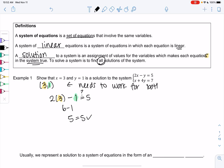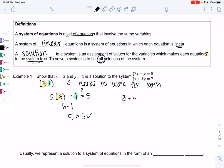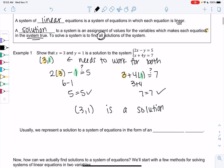But we need to check both equations. If it only works for 1, it's not a solution. It needs to work for both. So we'll check in the second equation. So x plus 4y becomes 3 plus 4 times 1, and then does it equal 7? So again, 3 is x, 1 is y. So we get 3 plus 4, or we get 7 equals 7. So 3, 1 is a solution.